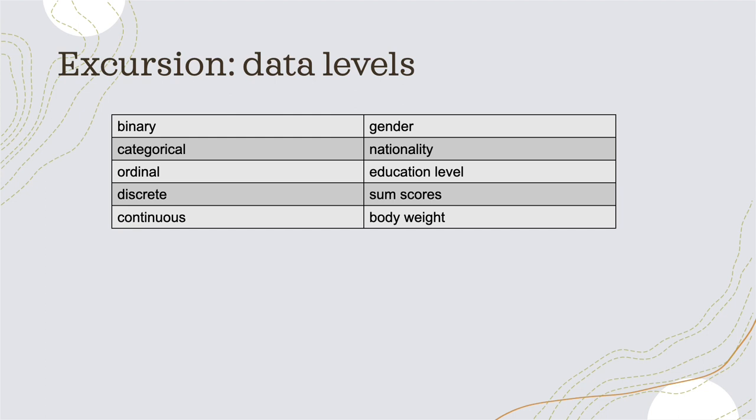The last data level I want to introduce is continuous data. Body weight is a good example — it can take values with decimals. It can be 63, but it can also be 63.1, or 63.125 — it can have any value.